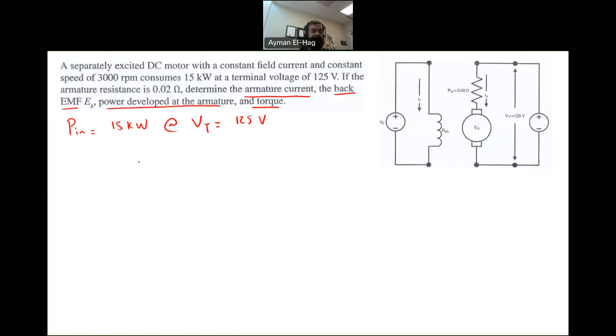So PN is basically equal to VT times IA. So from this, you can find that your IA is equal to PN divided by VT. So PN is equal to 15 times 10 to the power of 3 divided by VT, which is 125 volt.